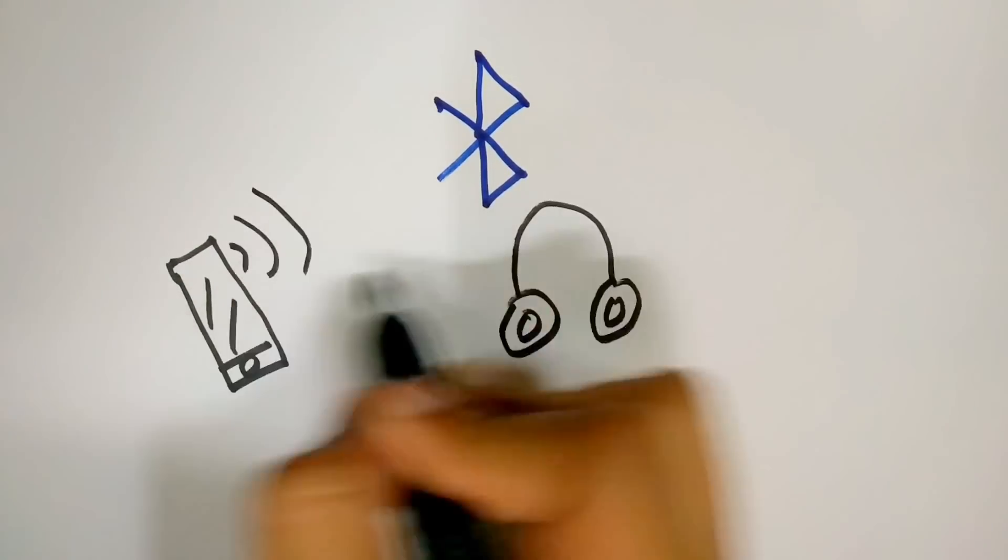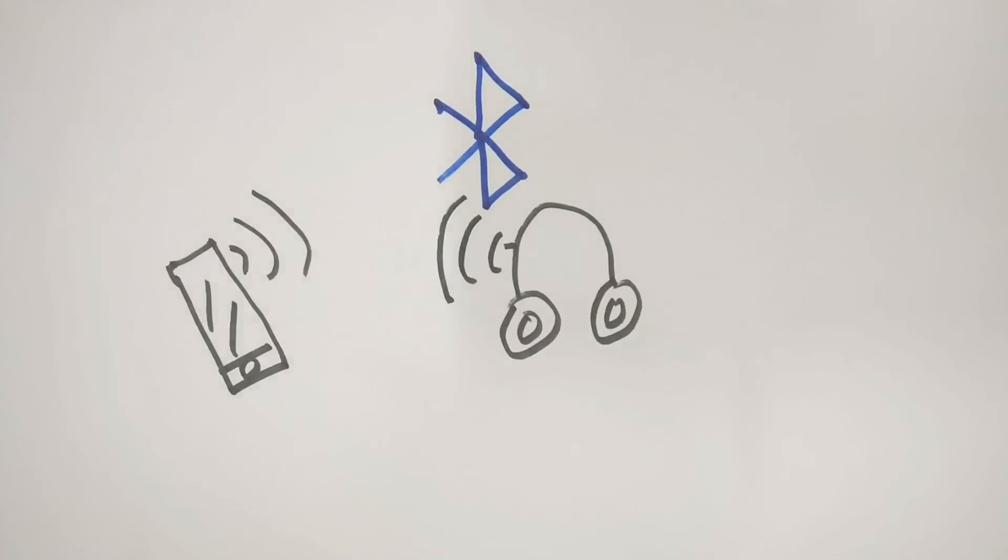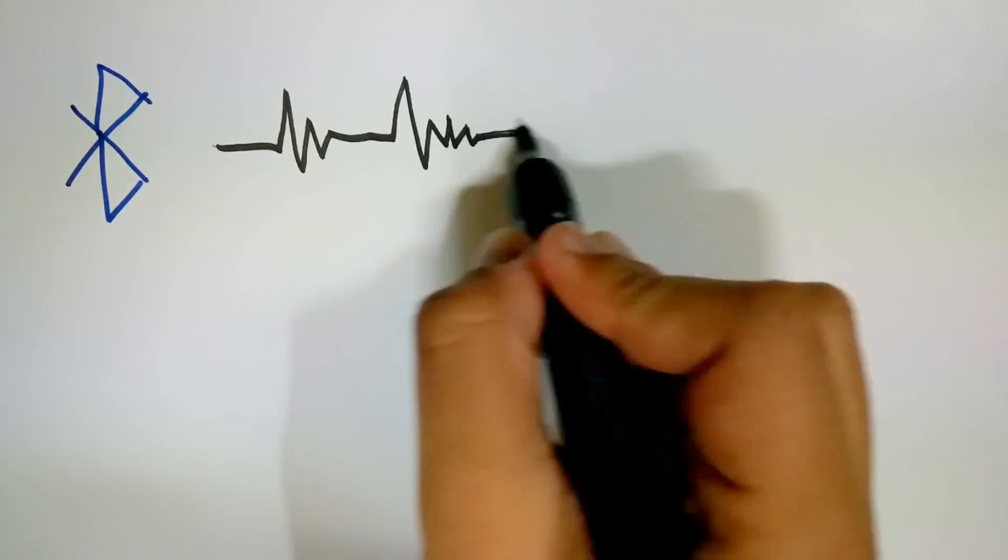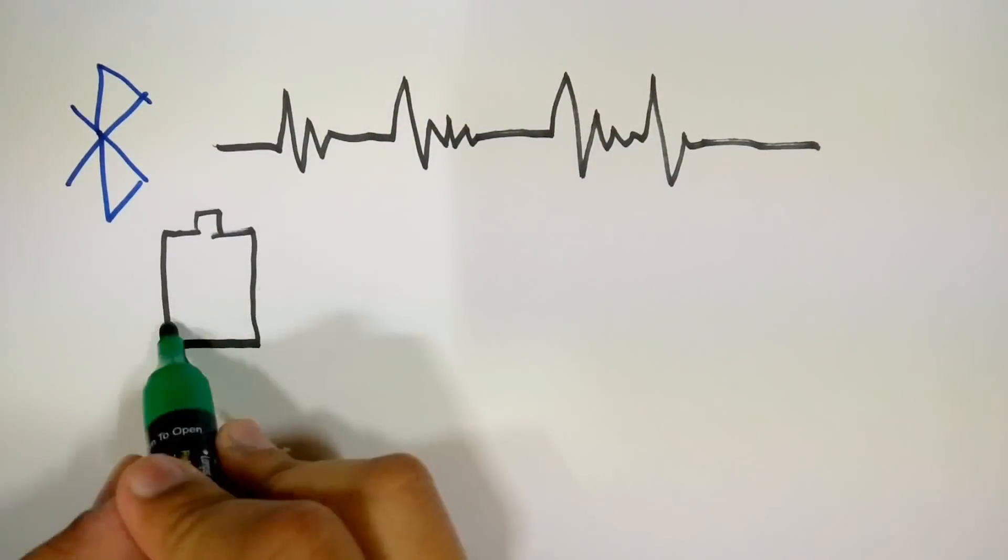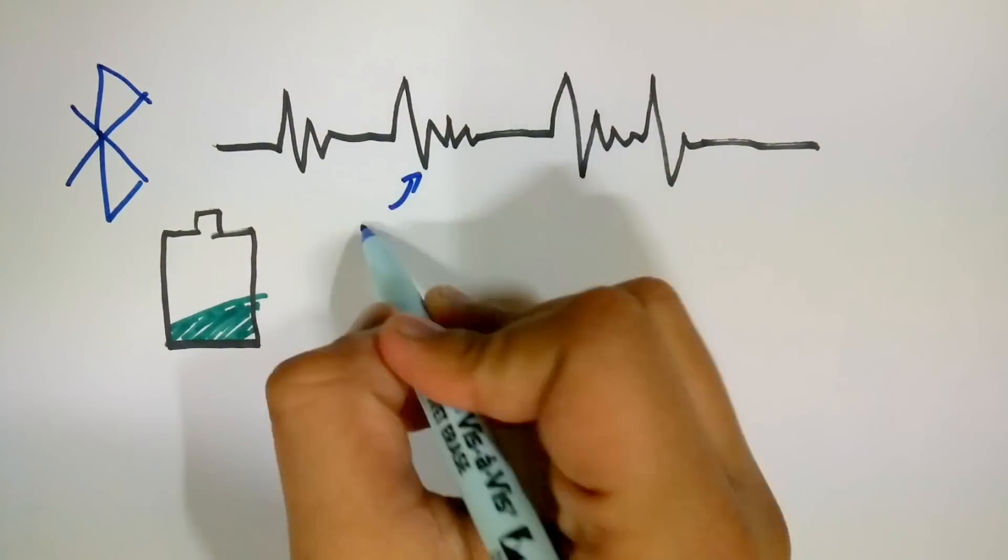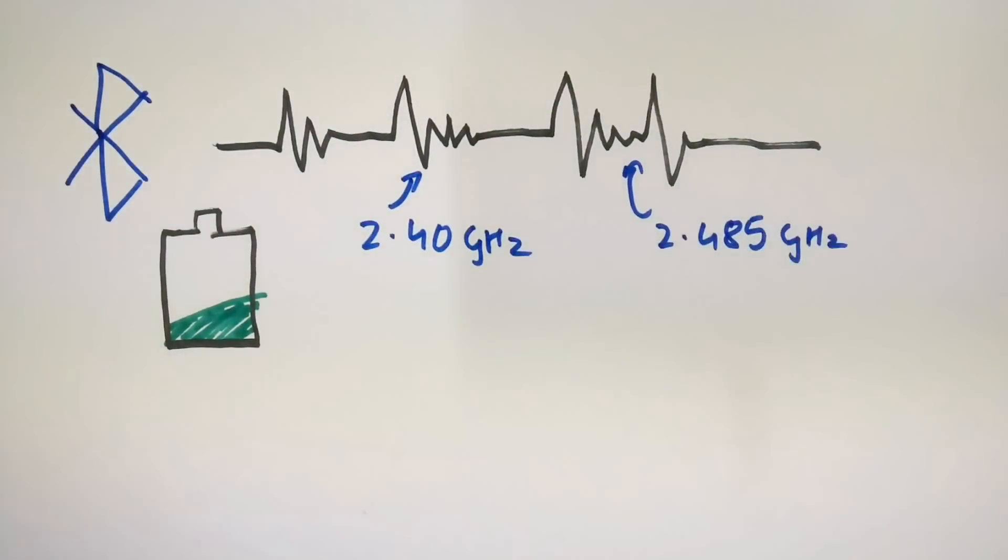Bluetooth. It cuts the cord and establishes a wireless connection between two devices. Bluetooth transfers data through low power radio waves whose frequency ranges from 2.40 GHz to 2.485 GHz.